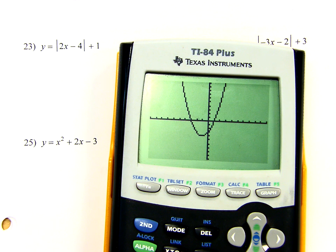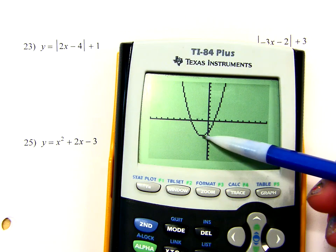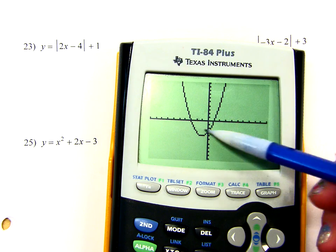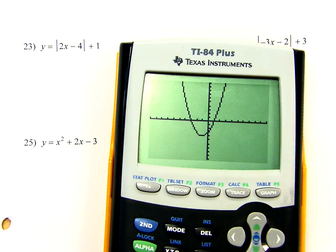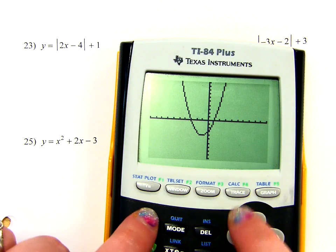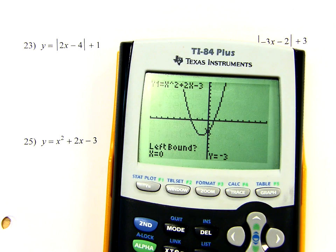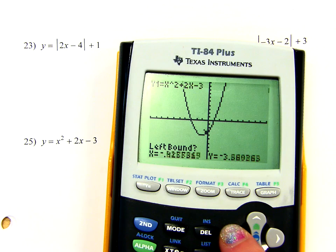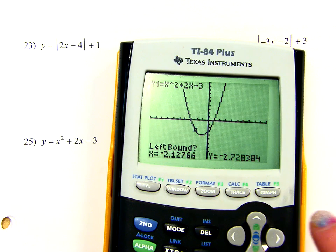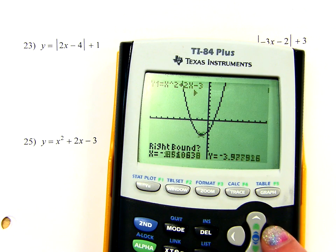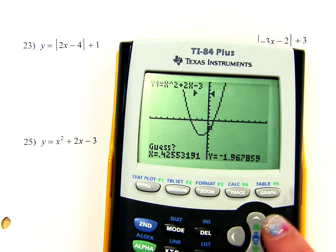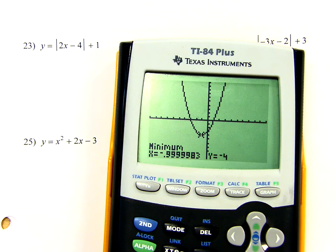So just like with the absolute value, you have to decide if this is a max or a min, this vertex point. So what would it be here? A min, right? That's the lowest point on the whole graph. So I hit the same series of buttons, second calc. I'm going to choose choice 3 because this is a minimum. And then it's asking me the same questions. It's saying put me to the left of the lowest point, put me to the right of the lowest point. Hit enter one more time, and there it is.